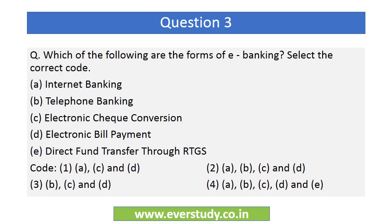The next question asks: which of the following are forms of e-banking? Options include internet banking, telephone banking, electronic check conversion, electronic bill payment, and direct fund transfer through RTGS. This is a straightforward question, but in the examination, people often try to find loopholes and take a narrow view of e-banking, thinking it only means doing transactions on a computer.